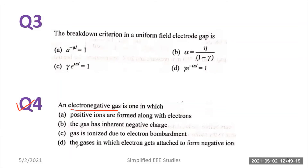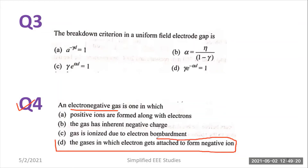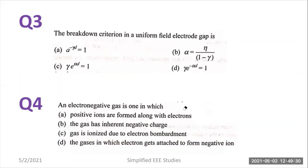Option D: the gas in which electrons get attached to form negative ions. According to the definition of electronegative gas, the right answer is option D — gases in which electrons get attached to form negative ions. The breakdown process of electronegative gases is known as the attachment process. I have explained the details of attachment process in the previous video and will put the same link in the description box.